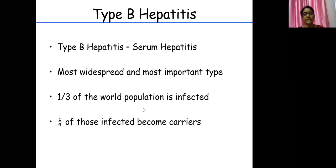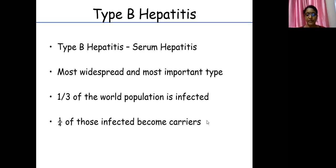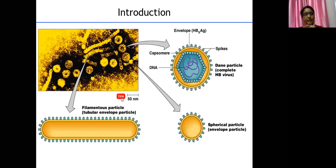Hepatitis B is a very widespread and important viral infection. It has been estimated that one-third of the world population would have been infected with this virus. Among this one-third, one-fourth of the people who become infected become lifelong carriers — meaning they show no signs or symptoms but harbor the virus and can transmit it to others. These people are dangerous as they spread infection in the community.